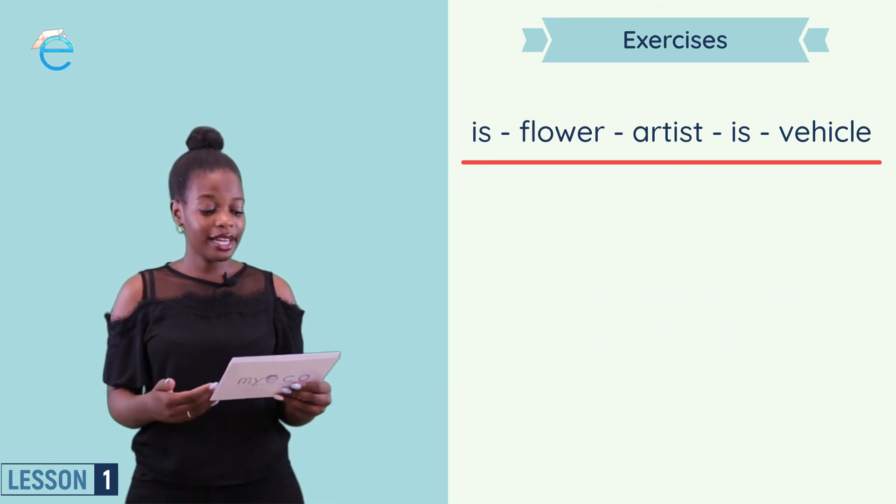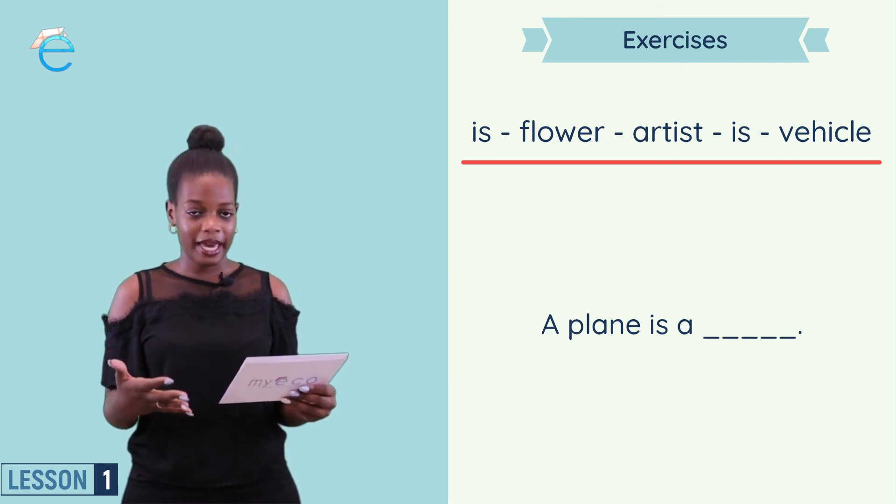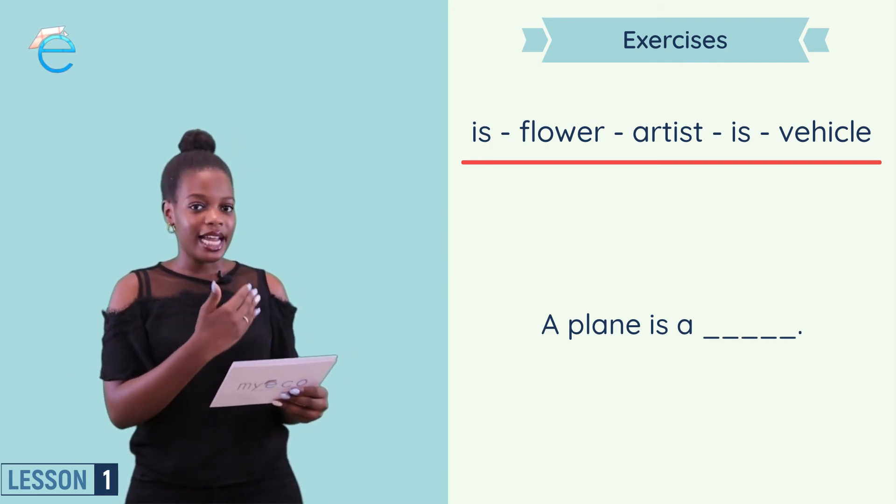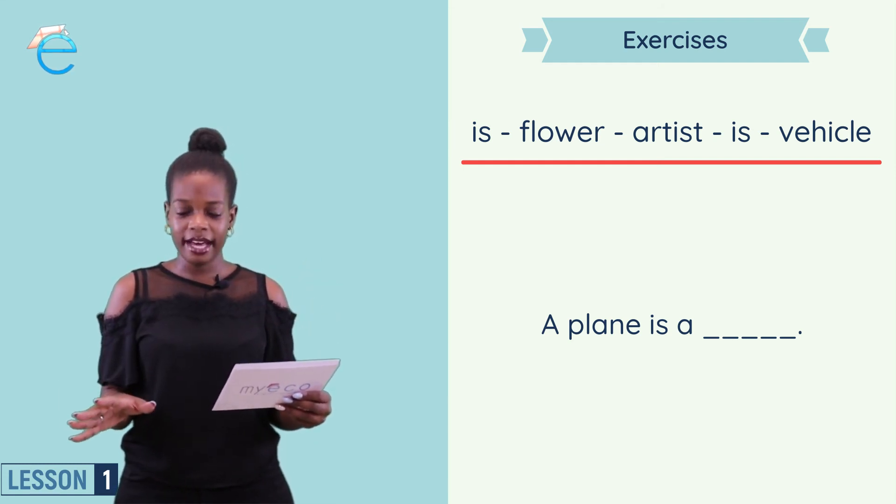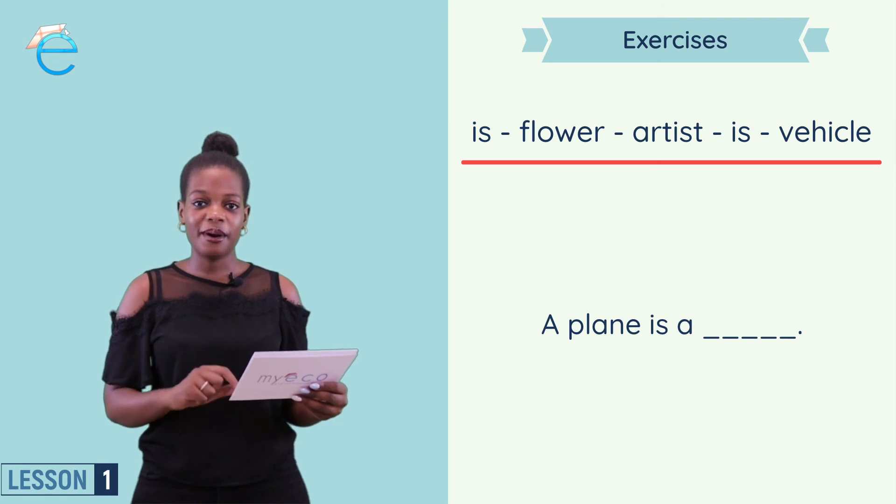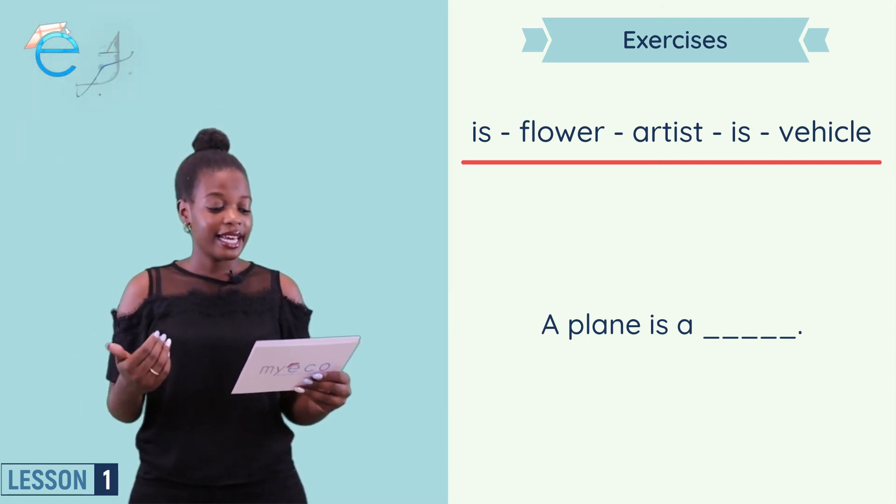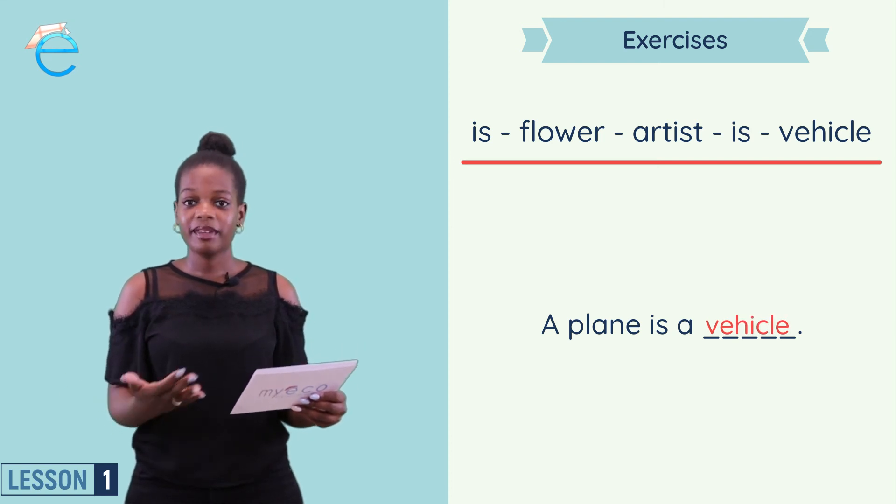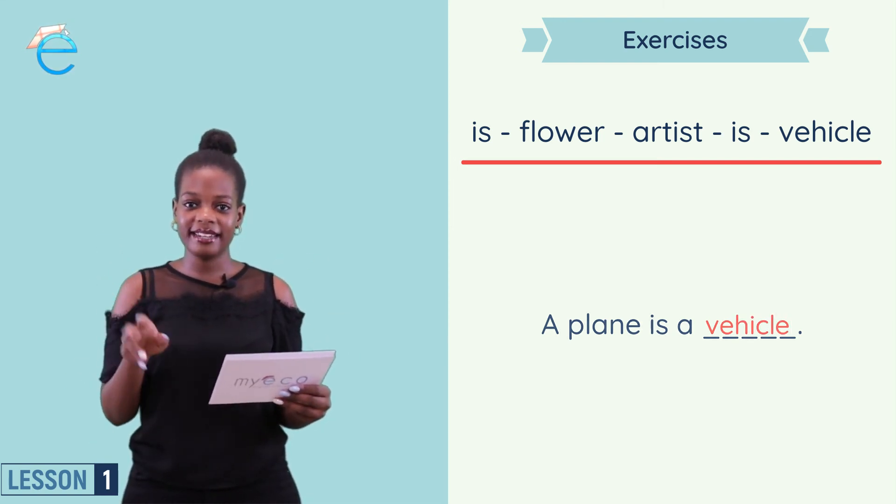Number three. A plane is a blank. Okay, noun plus is plus noun. Noun plus is a plane and is is okay, we have that. Meaning my last noun is missing. So what I need to say is a plane is a vehicle. Noun plus is plus noun. Vehicle is my second noun.